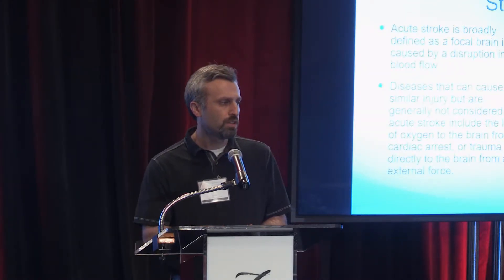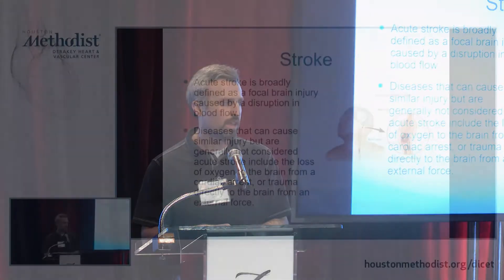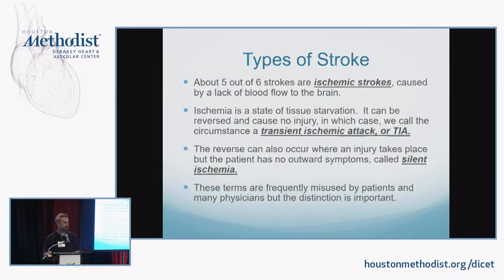Stroke is broadly defined as a focal brain injury caused by a disruption of blood flow. Other diseases that can cause brain injury from a lack of blood flow would be a hypoxic injury or a global hypoxic injury — we generally don't consider that a stroke. Trauma can also cause a disruption of blood flow, but we don't consider that stroke either. We're really talking about something with the intrinsic circulation of the brain causing a lack of blood flow.